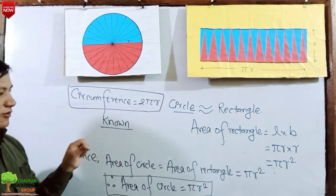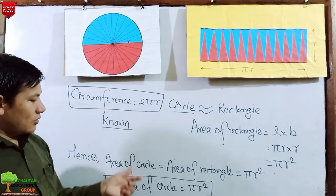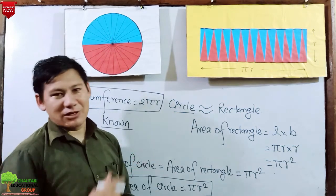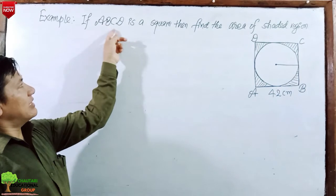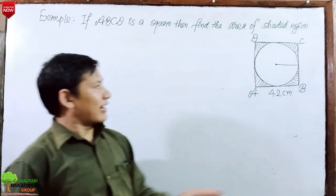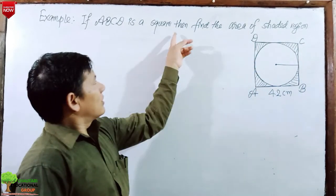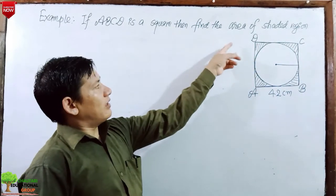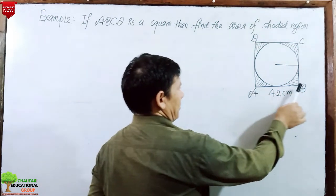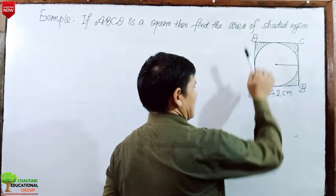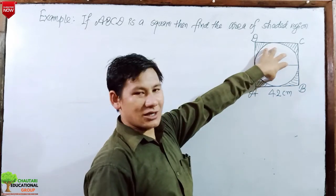This is the formula. Now let's use an example. If ABCD is a square, then find the area of a certain shaded region. ABCD is a square with an inscribed circle of radius r.